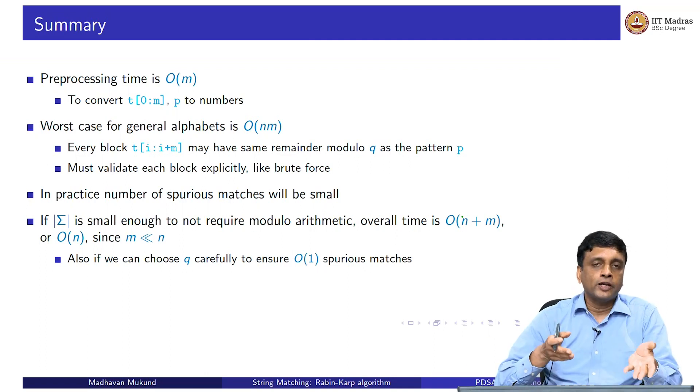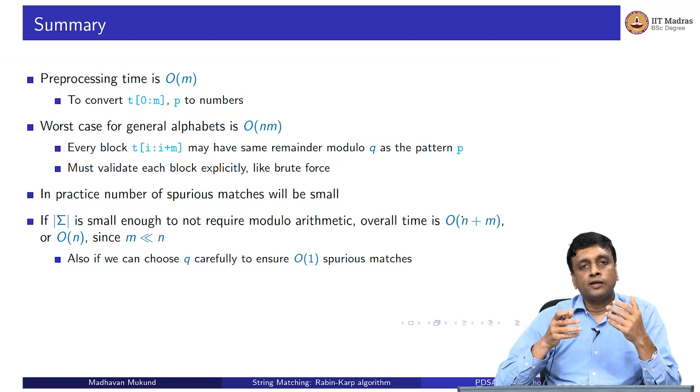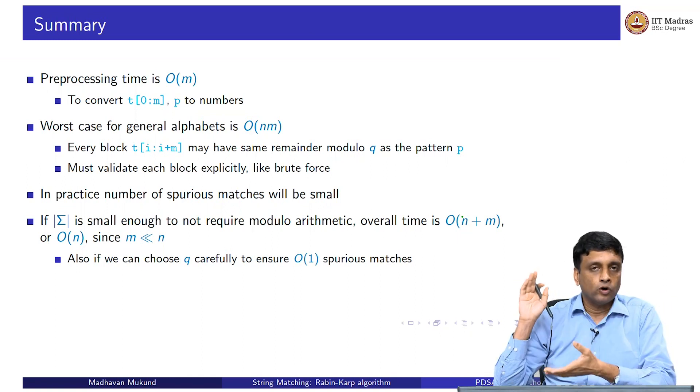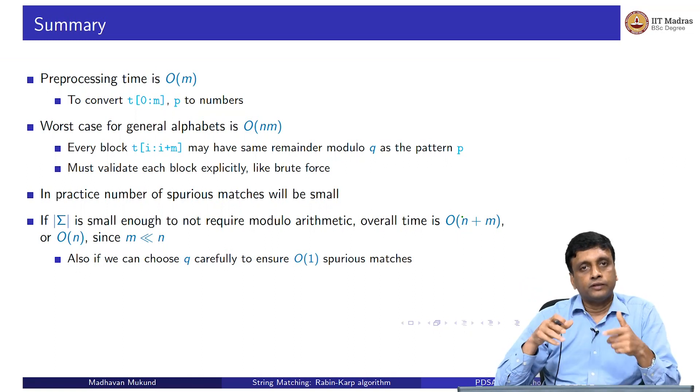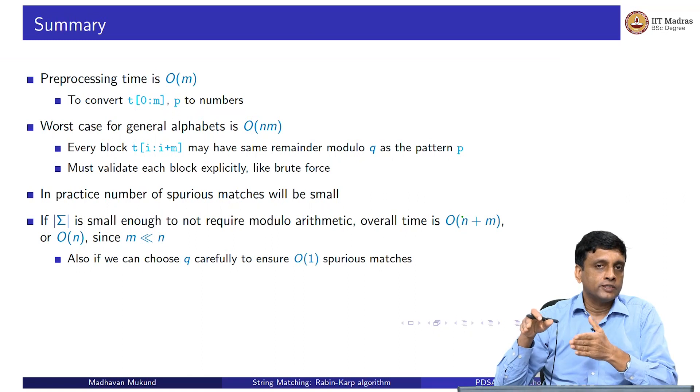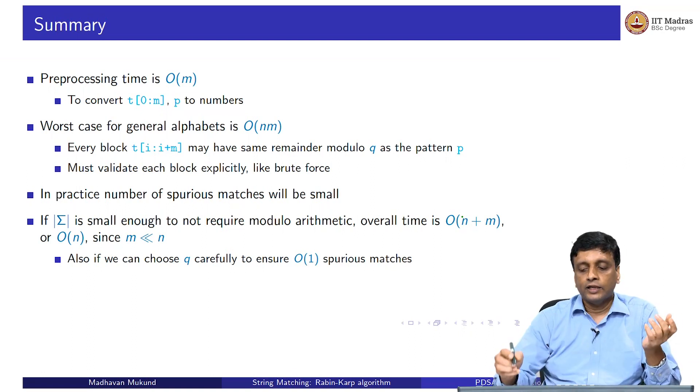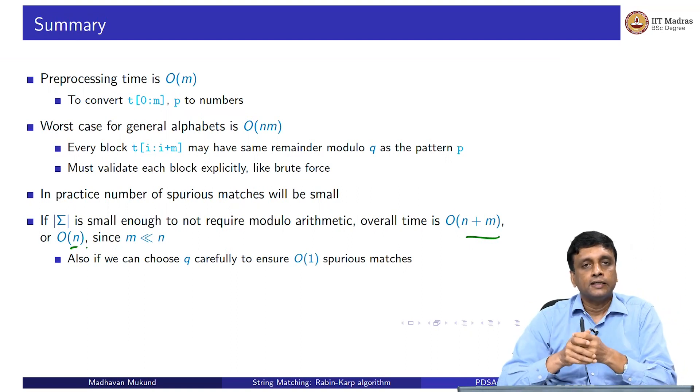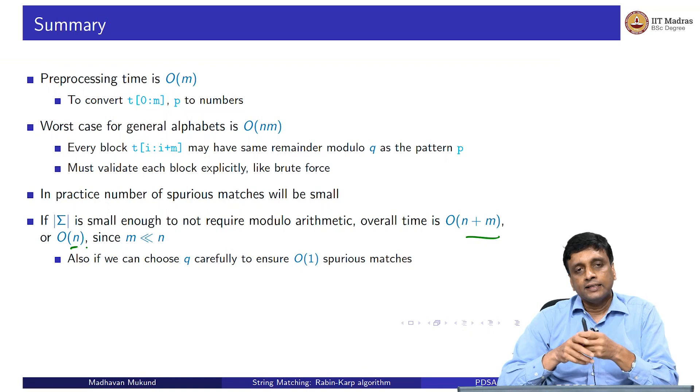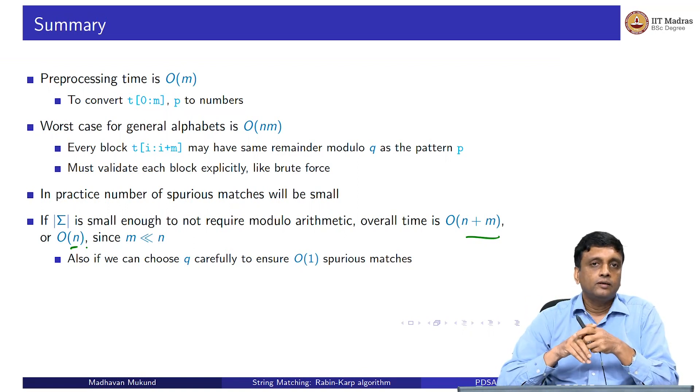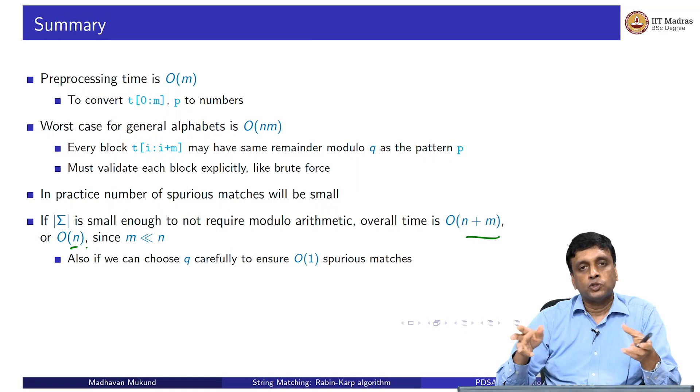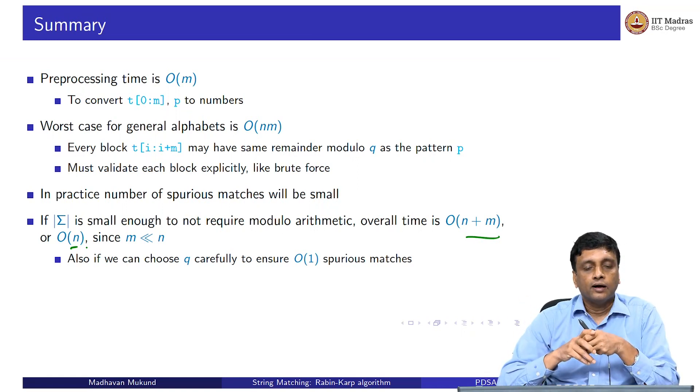One thing we have seen is that if you have a small enough sigma, like we looked at 10, then you can actually do this arithmetic explicitly, you do not have to go modulo. If you do it explicitly, then it reduces to order n plus m, because you do an order m preprocessing, and each shift takes a constant amount of time. Processing, updating the number and checking equality is a constant operation. In order n steps, I can process the entire string. I can think of n plus m as n in general, because I can always assume that m is much smaller than n. The other thing is that we can be like in hashing, we can see if we can choose a good q. By choosing the prime numbers that we are going modulo well, we could again make sure that the number of collisions is small. But there is no fixed guarantee as such, once you go to large alphabets, that you are going to actually save anything with this Rabin-Karp method.